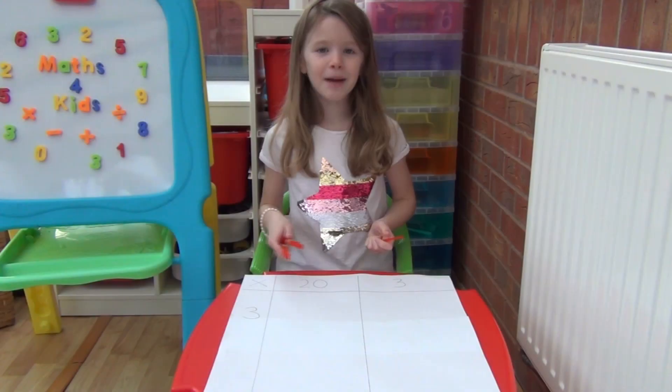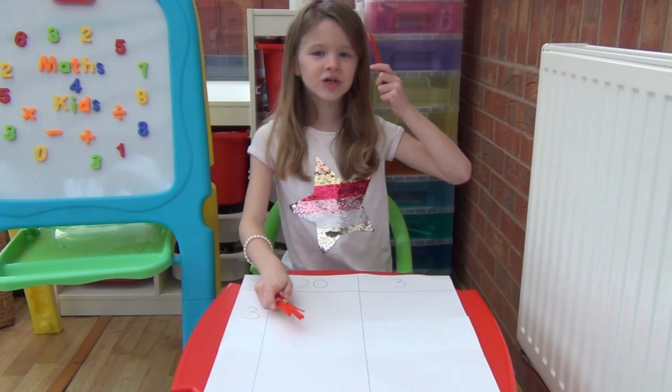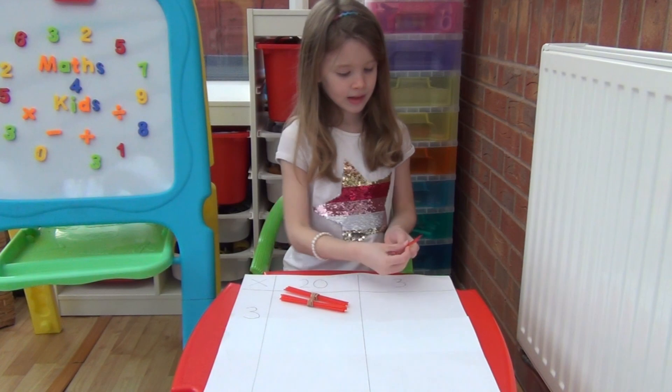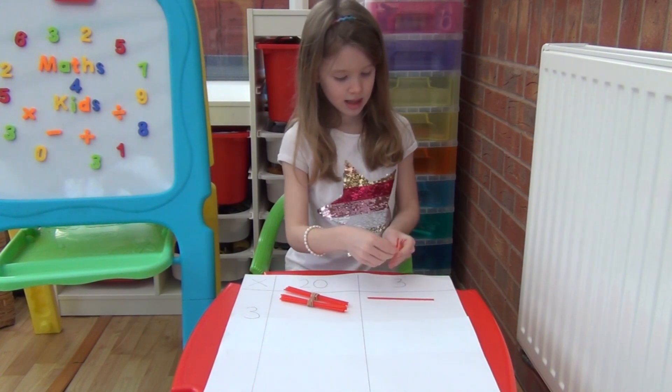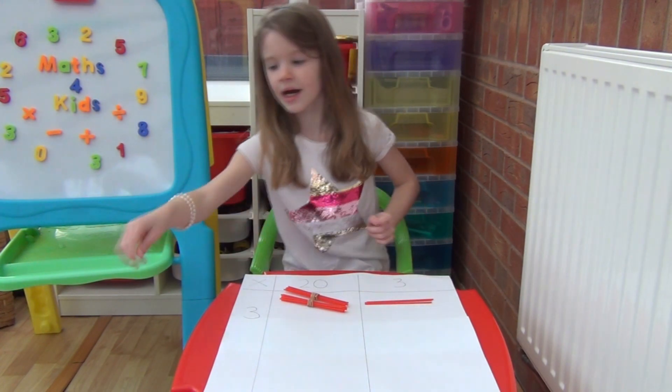We are going to multiply both 20 and 3 by 3. I'm going to use two bundles of 10 straws and three individual straws to make 23. And I'm going to do this three times.